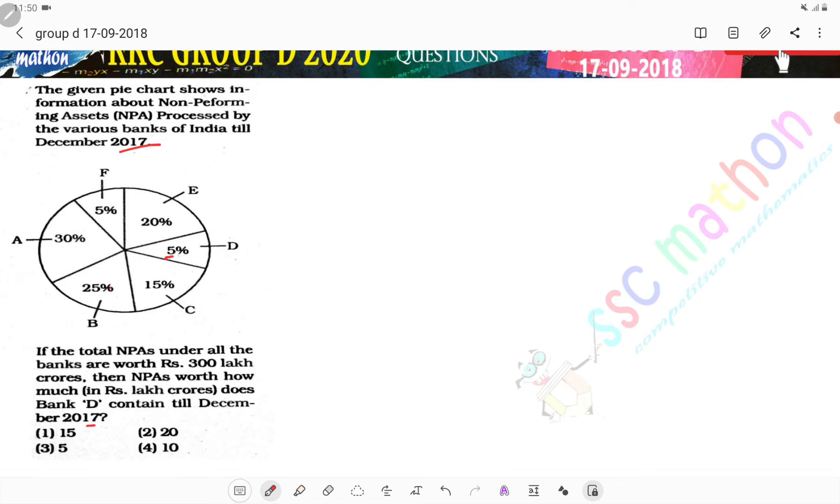To D ka percentage kitna hai sir? 5%. 300 lakh crore me 5% kitna ho raha hai? Divide by 100, 3 into 5, 15. So, 15 lakh crore is the correct answer, option number 1.